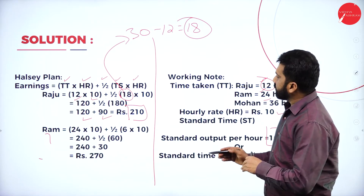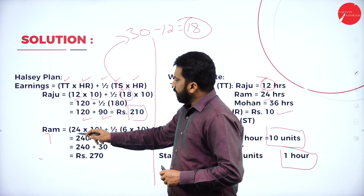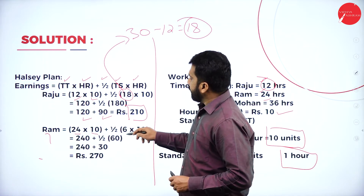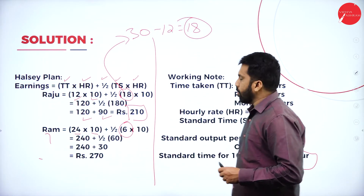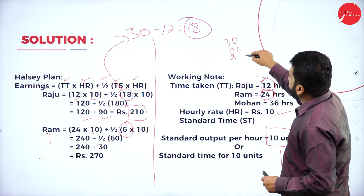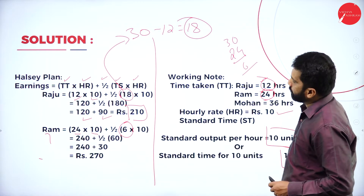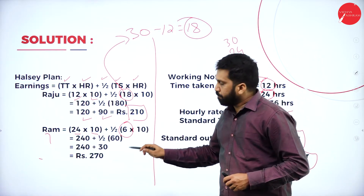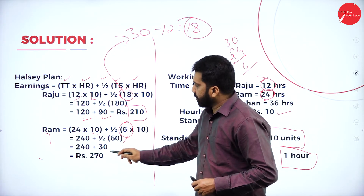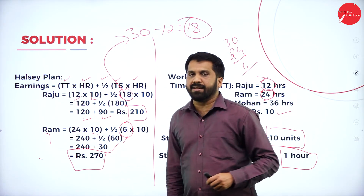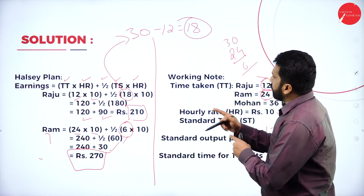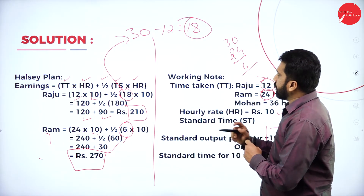For Ram (time taken = 24 hours): standard time is 30, so time saved = 30 − 24 = 6 hours. Calculation: 24 × 10 = 240, plus half of (6 × 10) = half of 60 = 30. Total earning for Ram = 240 + 30 = 270.